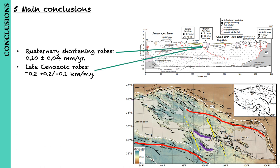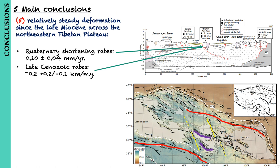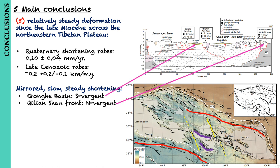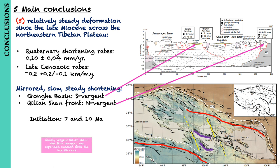The correspondence between post-late Miocene slip rates and late Quaternary slip rates suggests relatively steady deformation since the late Miocene across the northeastern Tibetan Plateau. There appears to be mirrored, steady, and slow shortening along south-vergent fault networks along the Gonghe Basin and north-vergent thrusting along the northern Qilian Shan front range. Both fault systems appear to have initiated between 7 and 10 million years ago, implying that the doubly vergent Qinghai-Nanshan orogeny has expanded outward since the late Miocene.